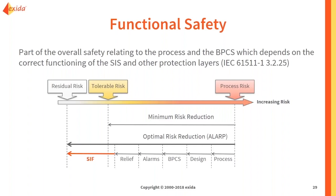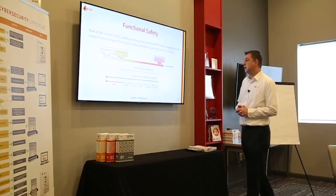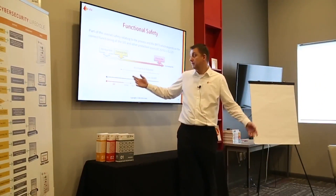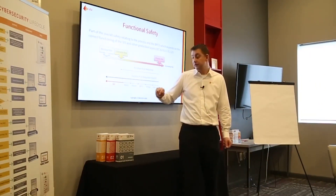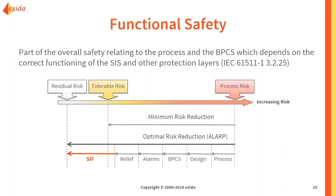There are many ways to achieve risk reduction. We can make changes to the process — if there are lower quantities of explosive materials, explosions will be smaller and effect zones will be smaller. We could change our overall process design; if leaking pipes is an issue, maybe we use dual wall piping. We may have a control system implementing an interlock, an operator responding to an alarm, or a relief device that releases pressure from a vessel.